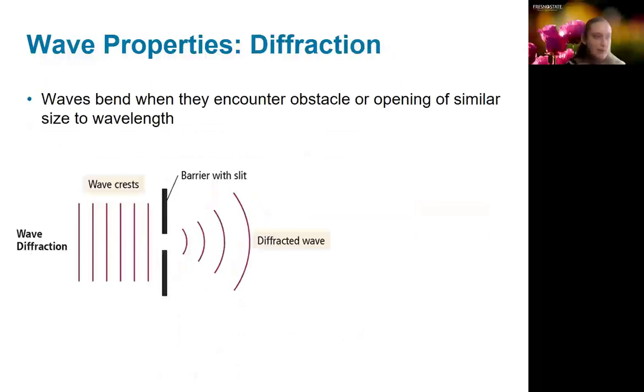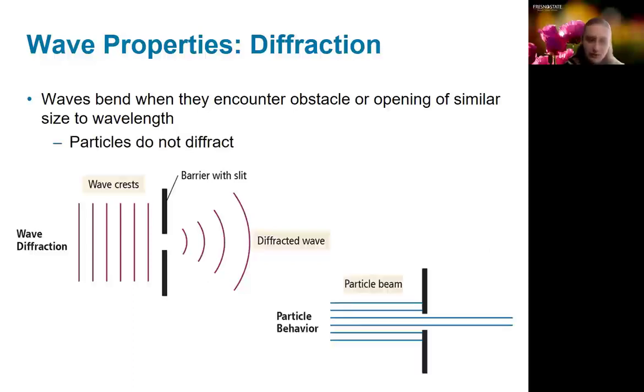Another property that's associated with waves is diffraction. And that's the idea that if you have a plane wave, and it passes through a slit or a barrier, it's going to diffract, meaning it's going to bend as it goes through. And that's different than particle behavior, where particles should pass straight through. So they wouldn't bend based on the edge of the barrier.